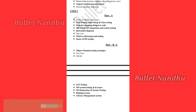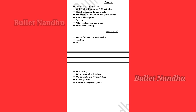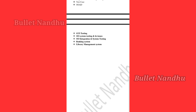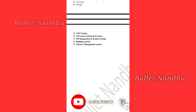Unit 5 also covers Class Testing. Part B and C topics include GUI Testing, Unit Testing, Class Testing, the difference between OO Integration and System Testing. We also cover Object-Oriented Testing Strategies, Banking System testing, and Library Management System design.